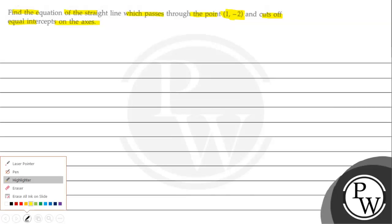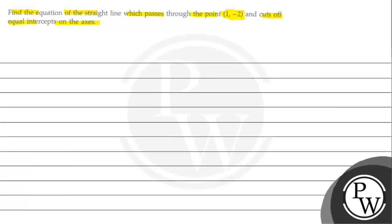So, equation of straight line find out karne hai. Point given and equal intercept on the axis. Ki concept ke use karenge? First of all, when intercepts are given, then we use the equation of line in intercept form.